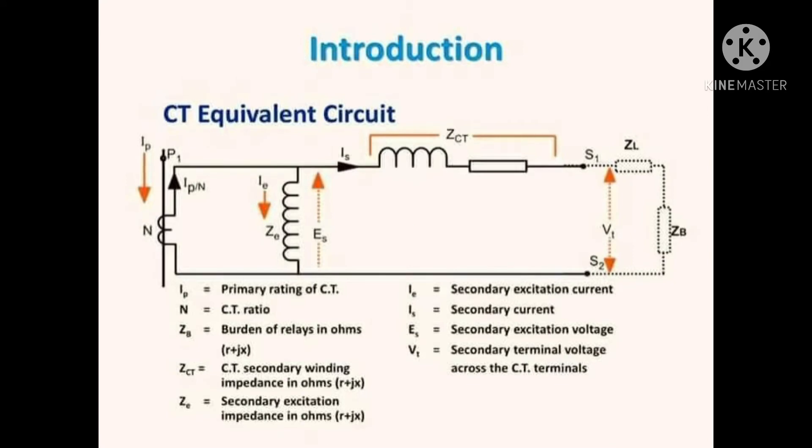Equivalent circuit of CT: the total impedance on the secondary side is the sum of relay burden, lead wire resistance, and leakage impedance of secondary winding. Therefore, the voltage developed in the secondary winding depends upon these parameters directly.